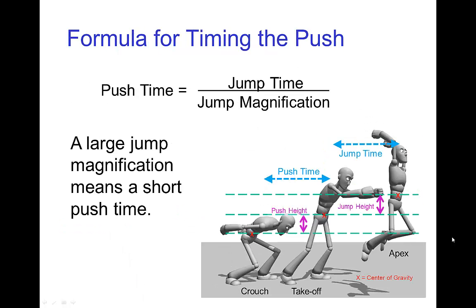This jump magnification is important in deciding the timing of the push. The push time is the time in the air — the jump time — divided by jump magnification.